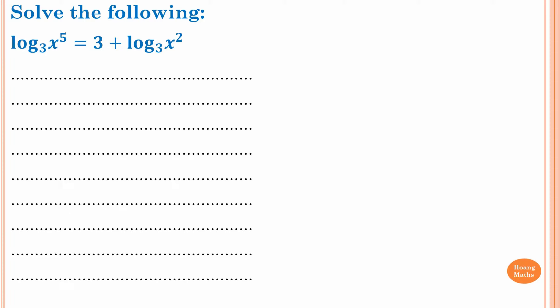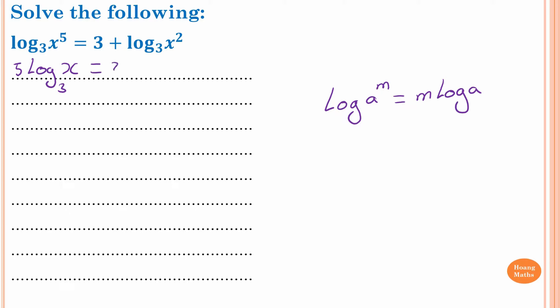To solve this, first of all, we know that log of a power of m is equal to m log a. So therefore, log base 3 of x to the power 5 is equal to 5 log base 3 of x, which is equal to 3, similarly plus 2 log base 3 of x.